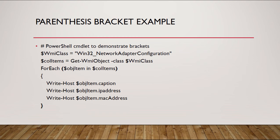We'll look at parenthesis first. If you ever see the curly lines of a braces bracket, it's usually going to come with the curved lines of a parenthesis bracket, because it's a compulsory argument — you could also call these a control structure. If we look at the braces bracket, you can see that each one of those ends with a type of output: caption, IP address, and MAC address. In order to show those particular items, we've got to have the compulsory argument, which our parenthesis bracket allows us to have.